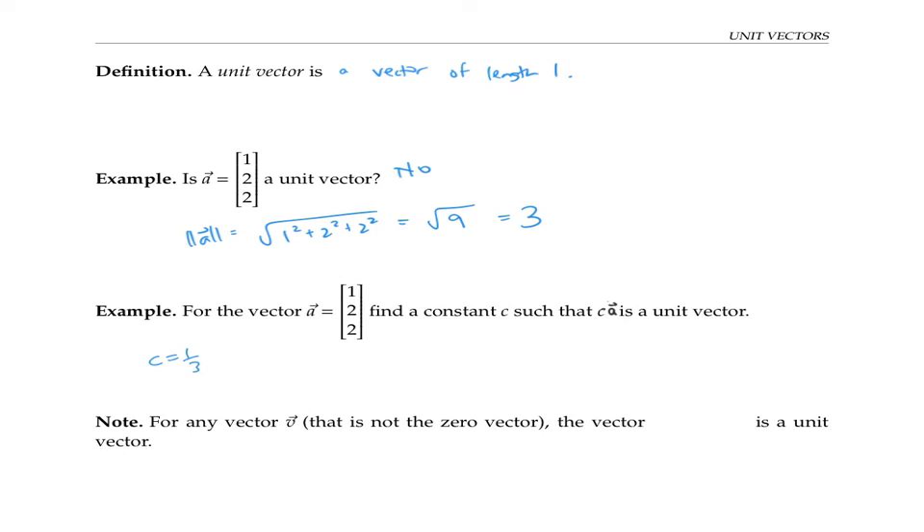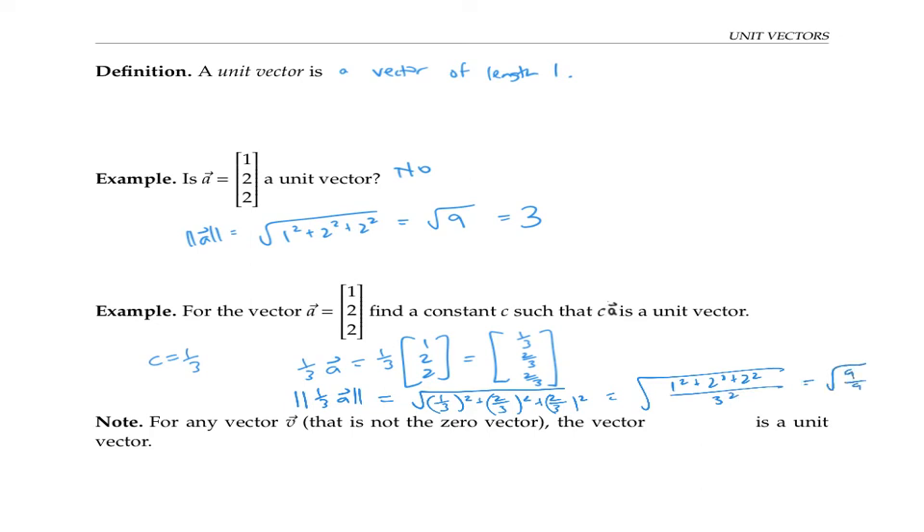Let's just check it with some arithmetic. One third times a is one third times each of these entries. And so the length of (1/3)a will be the square root of (1/3)² + (2/3)² + (2/3)², which is the same thing as the square root of (1² + 2² + 2²)/3², which works out to one.